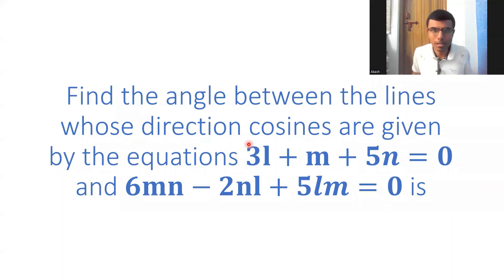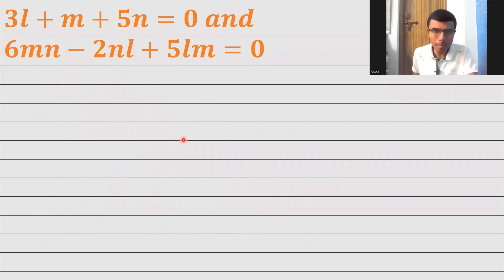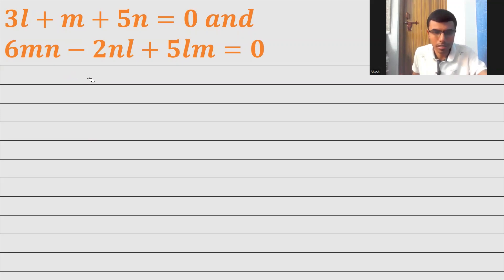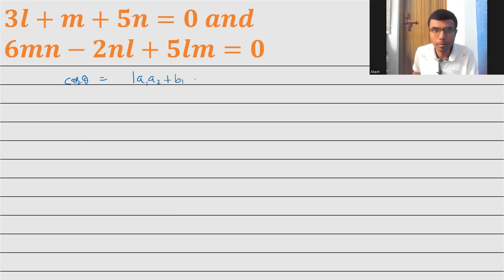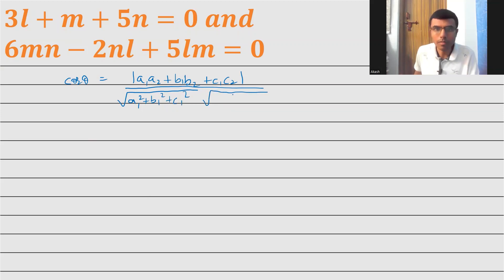Now what is asked in the question — find the angle between the lines. I got the DRs of the lines, so now I'm going to find out the angle between the lines using the cos theta formula. Cos theta is nothing but A1·A2 plus B1·B2 plus C1·C2, divided by the square root of A1 squared plus B1 squared plus C1 squared, into the square root of A2 squared plus B2 squared plus C2 squared.